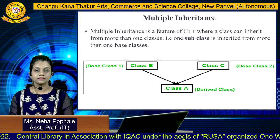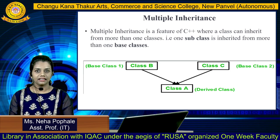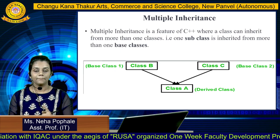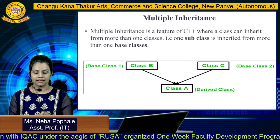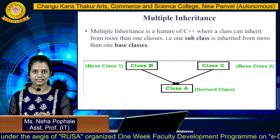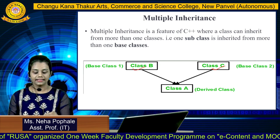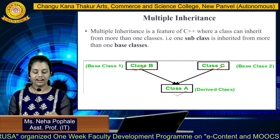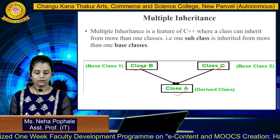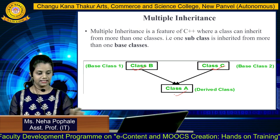Next is multiple inheritance. In multiple inheritance, there can be more than one base class. In this example, you can see there are two base classes, class B and class C, and there is only one derived class that is taking features from both base classes B and C.